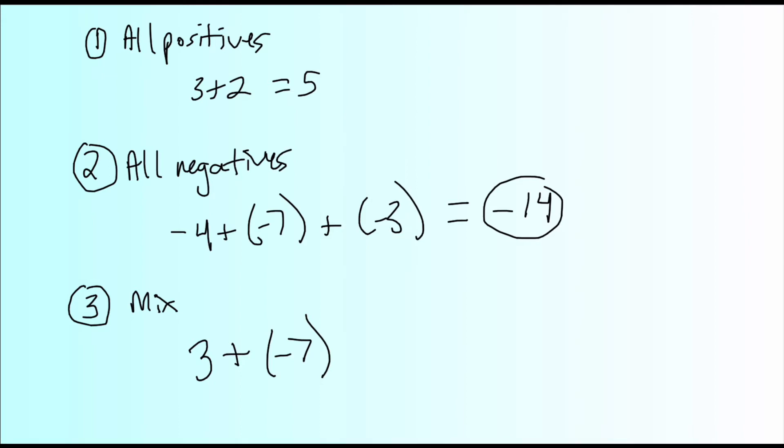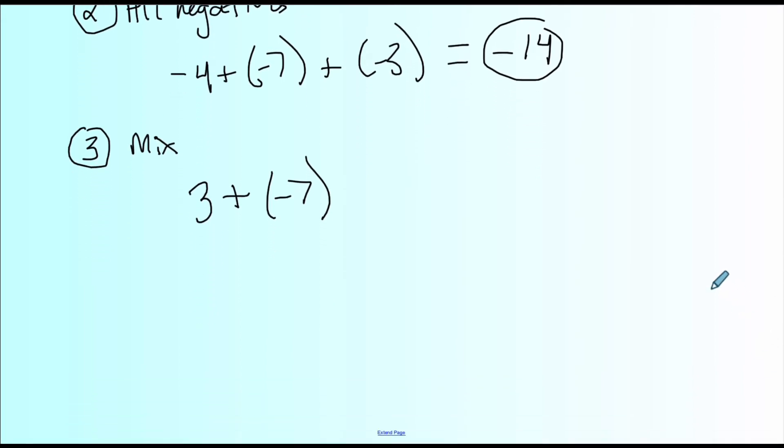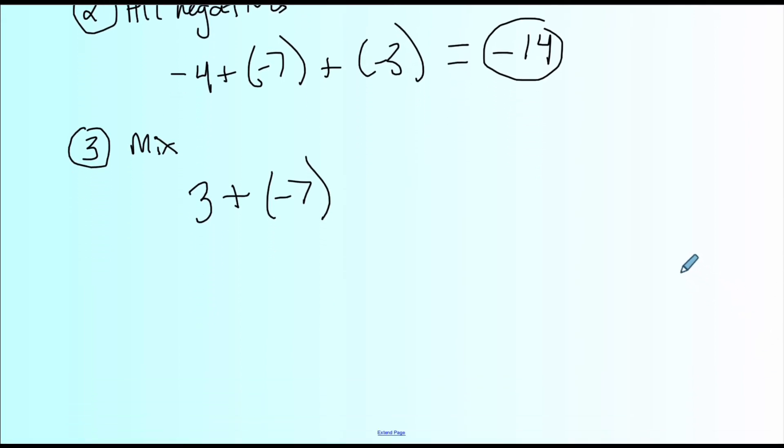There's a couple ways you can think of this. One way is just straight up understanding the rule. The rule states that if you're adding a positive and a negative, forget about the signs, treat them as if they're both positive, and just find the difference. So here, the difference of, we're going to pretend that this -7 is just regular old 7. The difference between 7 and 3, 7 - 3, is 4.